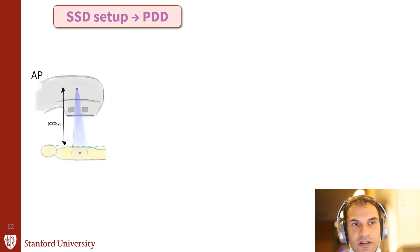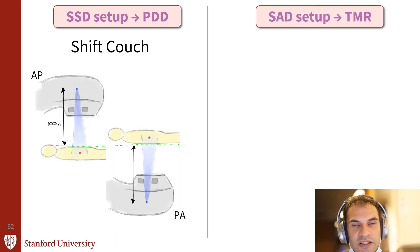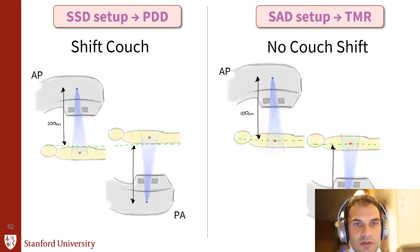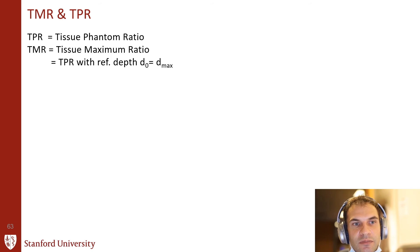For a simple two-beam SSD treatment, you shift the patient to keep the surface constant for each beam, done by moving the couch. For the SAD setup, the target is centered on the central rotation axis of the machine — for the posterior beam, you don't have to shift the patient since they're already on the central rotation axis. To clarify terms: TPR is tissue phantom ratio; TMR is a special case — tissue maximum ratio — and equals the TPR only if the reference depth is D-max.